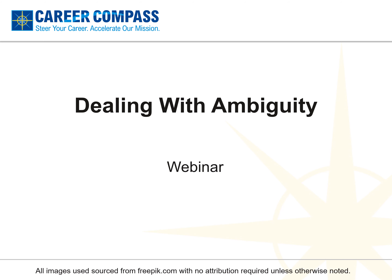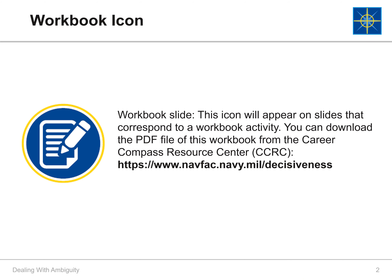The topic for today's webinar is dealing with ambiguity in support of the decisiveness competency. Throughout this video, you will see a paper-pencil icon on some slides indicating a workbook activity. When you see this icon in the top left corner, I'll be asking you to write something in your workbook or refer to your workbook. If possible, download the workbook from the Career Compass Resource Center, or CCRC, before continuing with this course.